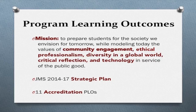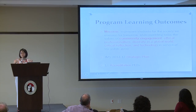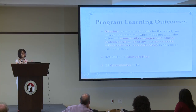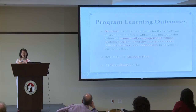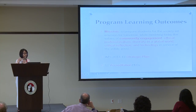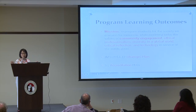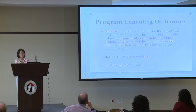That's the 'how' question. Now for the 'what': what are the program learning outcomes we are assessing? All 11 learning outcomes are tied to our mission and vision. Our mission is to prepare students to embrace the values of community engagement, ethical professionalism, diversity, critical reflection, and technology to serve the public good. We hope to prepare them to serve the community, be ethical and professional, serve diverse audiences, critically reflect on their own work, and use technology for the public good.